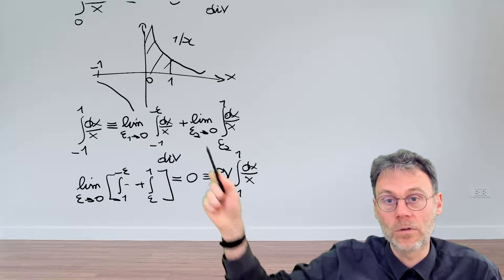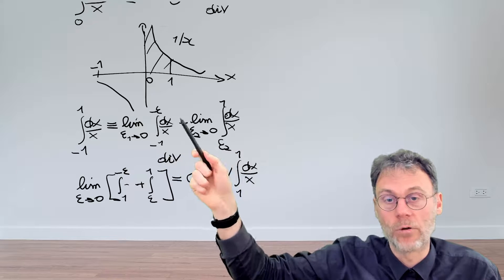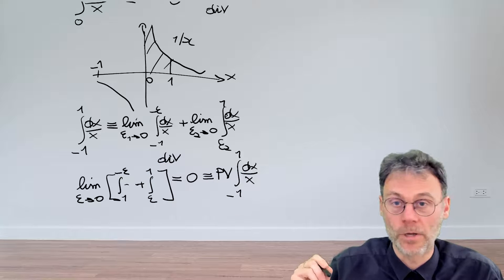And if you don't have principal value, then you need to approach the singularity from both directions completely independently from each other.